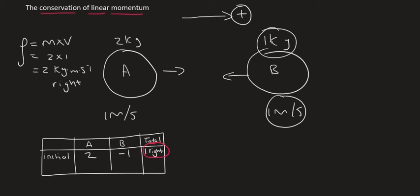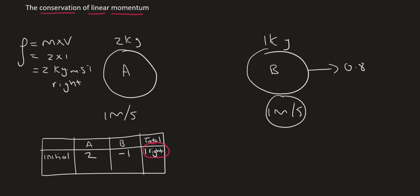So for example, let's say the two objects bump into each other and then they move apart. And let's say that object B moves away at 0.8 meters per second, but we don't know the velocity of object A. We don't know in which direction it's going to go, and we also don't know its velocity.